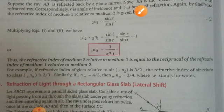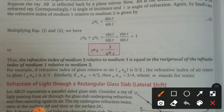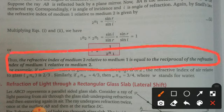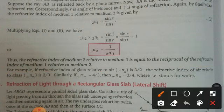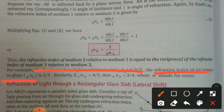The refractive index of medium 2 relative to medium 1 is equal to the reciprocal of the refractive index of medium 1 relative to medium 2. For example, the refractive index of glass relative to air is 3/2, so the refractive index of air relative to glass is 2/3. Similarly, if the refractive index of water with respect to air is 4/3, then the refractive index of air with respect to water is 3/4.